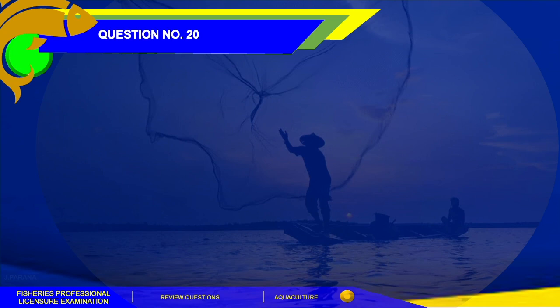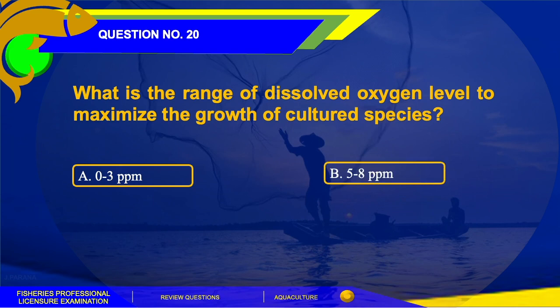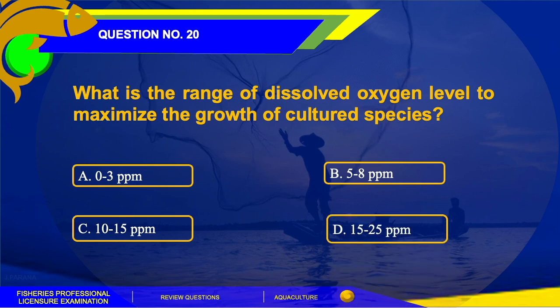Question number 20. What is the range of dissolved oxygen level to maximize the growth of cultured species? A. 0–3 ppm or parts per million, B. 5–8 ppm, C. 10–15 ppm, or D. 15–25 ppm.